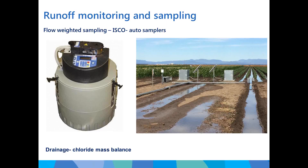Runoff monitoring used ISCO auto-samplers with a logger to measure flow height, programmed for flow-weighted sampling to get a good average concentration across the entire flow event. Deep drainage was measured using chloride mass balance modelling, by measuring chloride content in soil sampled before planting and after harvest.